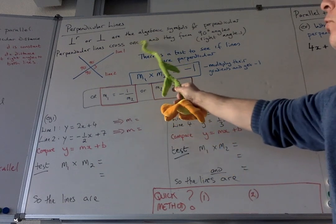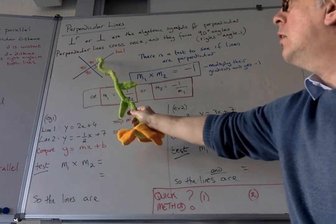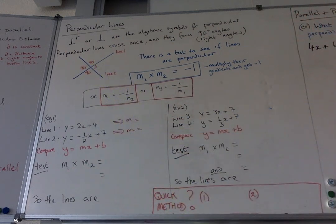Perpendicular lines cross once and they form 90 degree angles. Line, line, crossing here, lots of four nice little right angles in there.